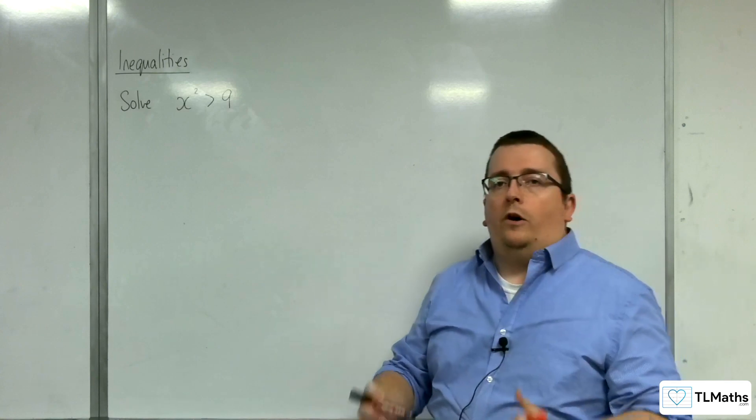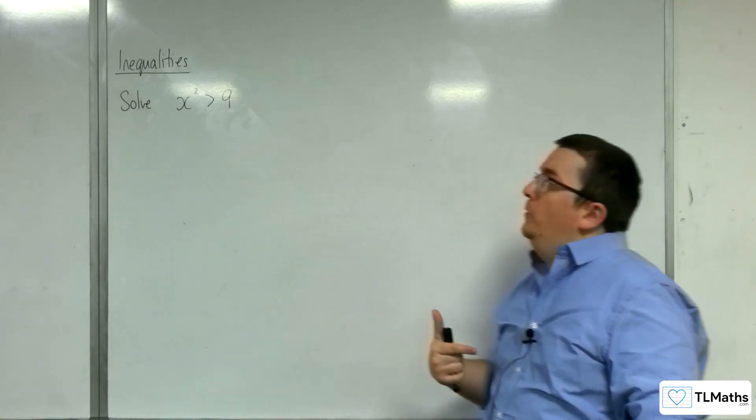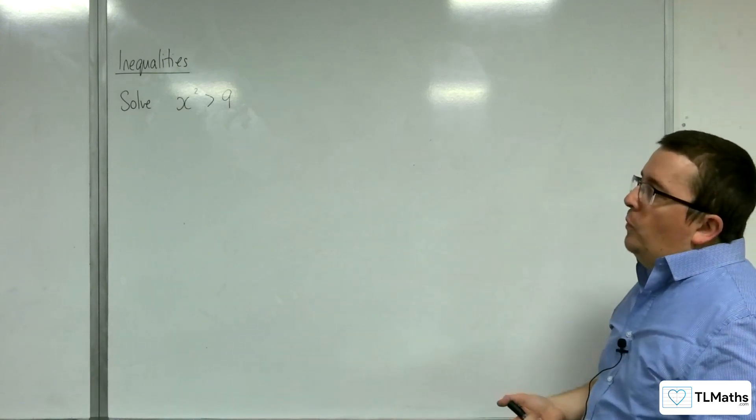We saw our first example of a quadratic inequality in the previous video. Let's now look at solving x squared is greater than 9.